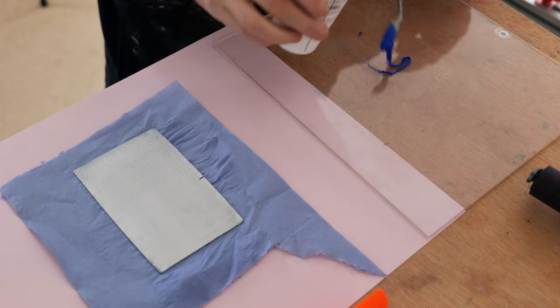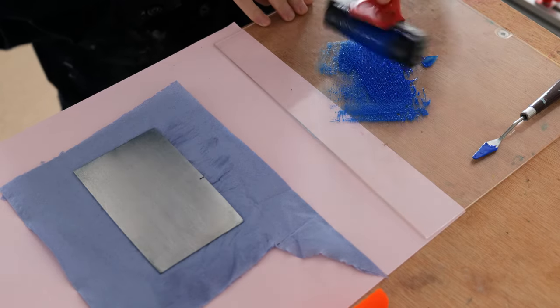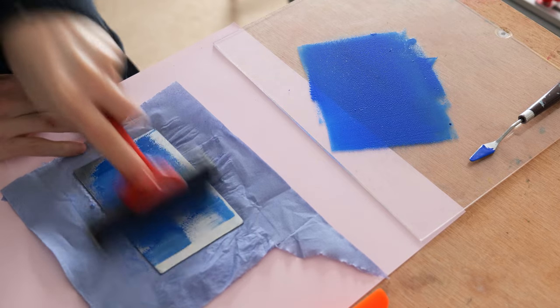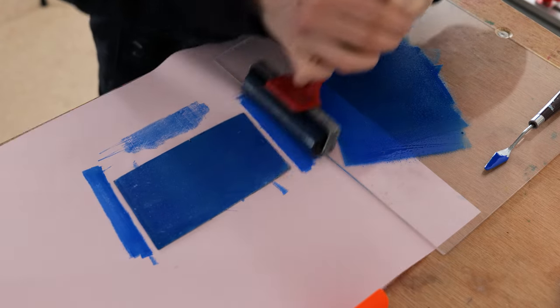We begin by coating an aluminum sheet in a photopolymer etch resist. This will allow us to expose our image or text on the metal and mask off the other areas so they do not get etched. This is light sensitive so be sure to coat your metal and let it dry in a dark room.